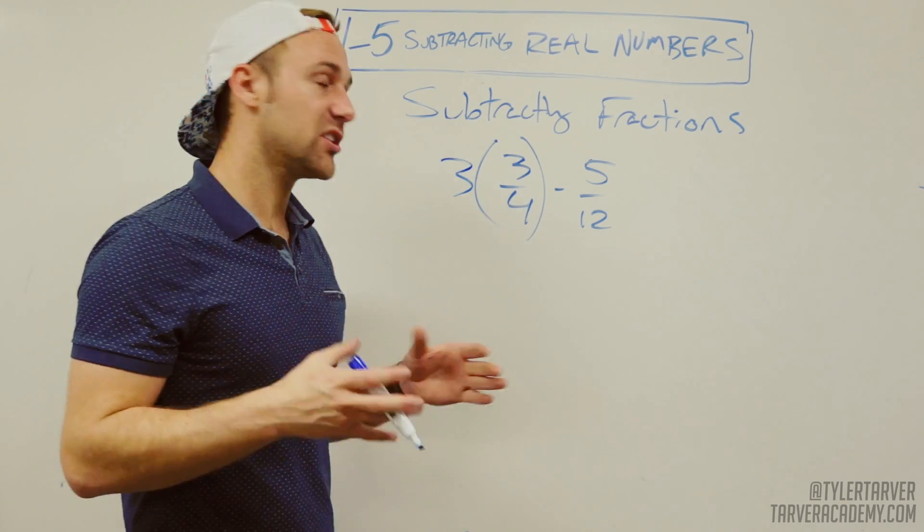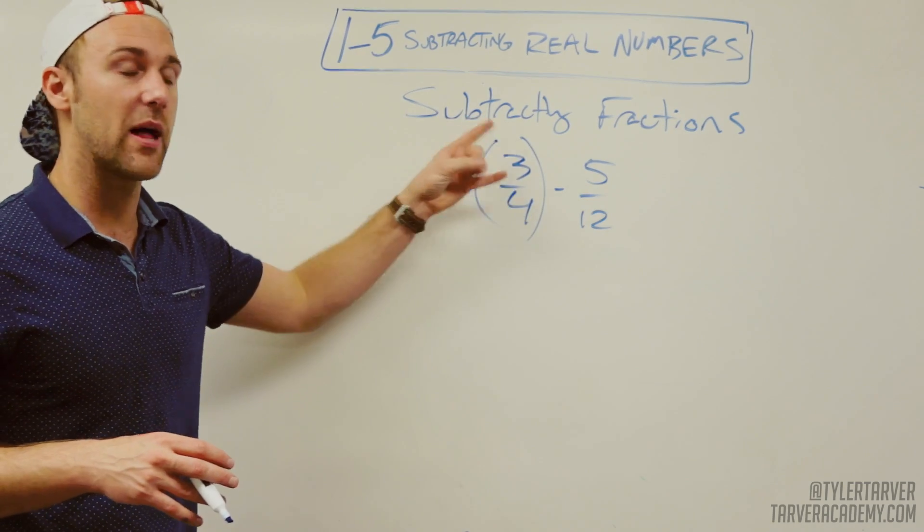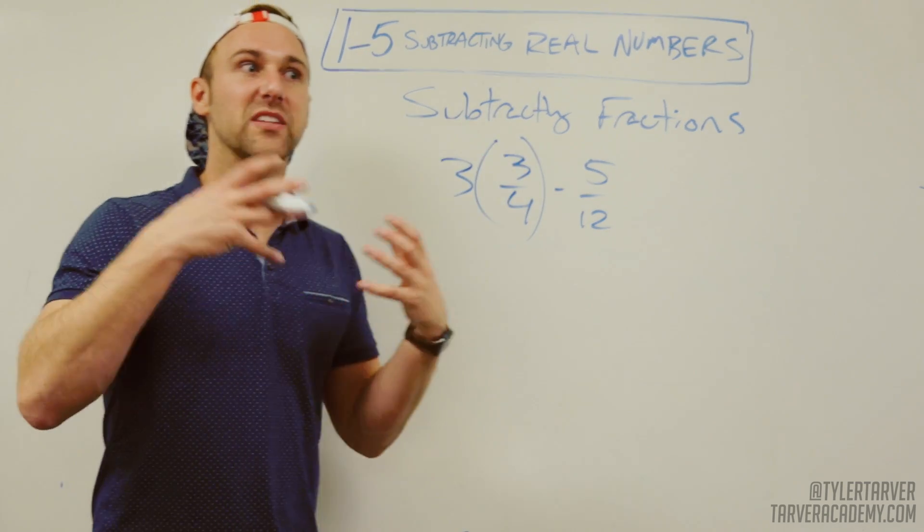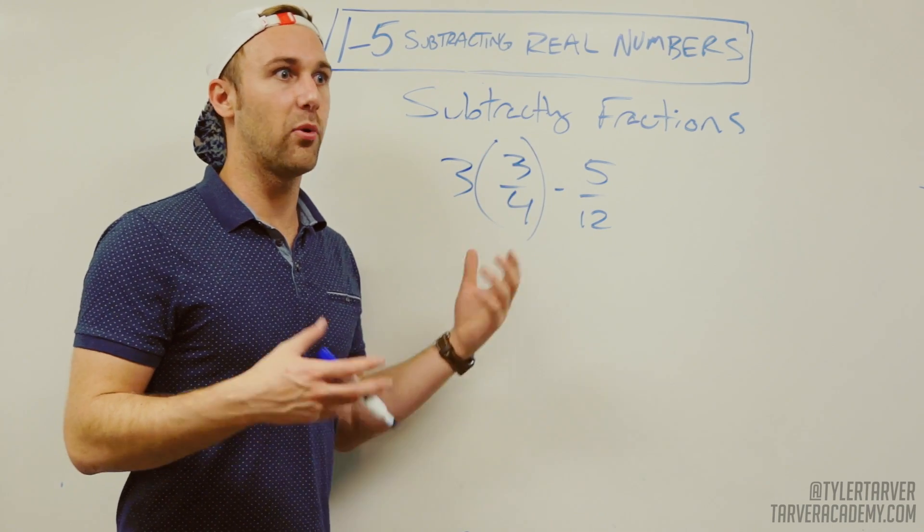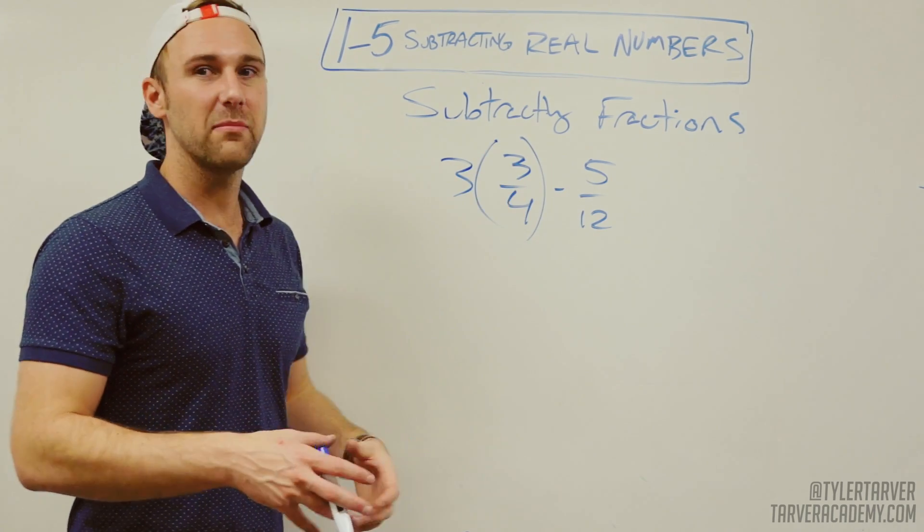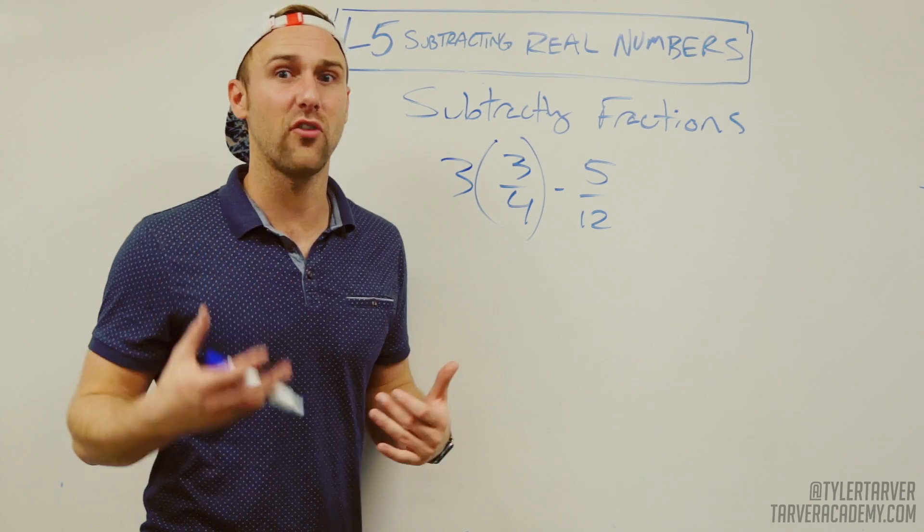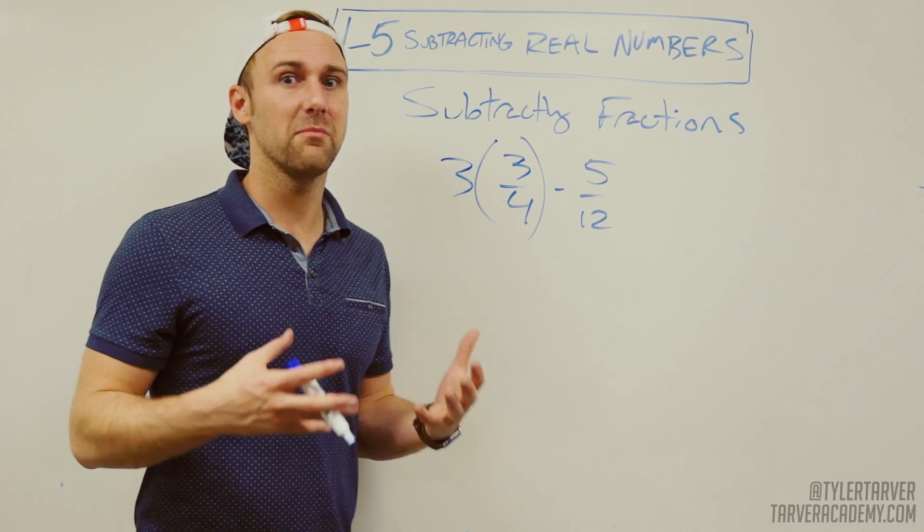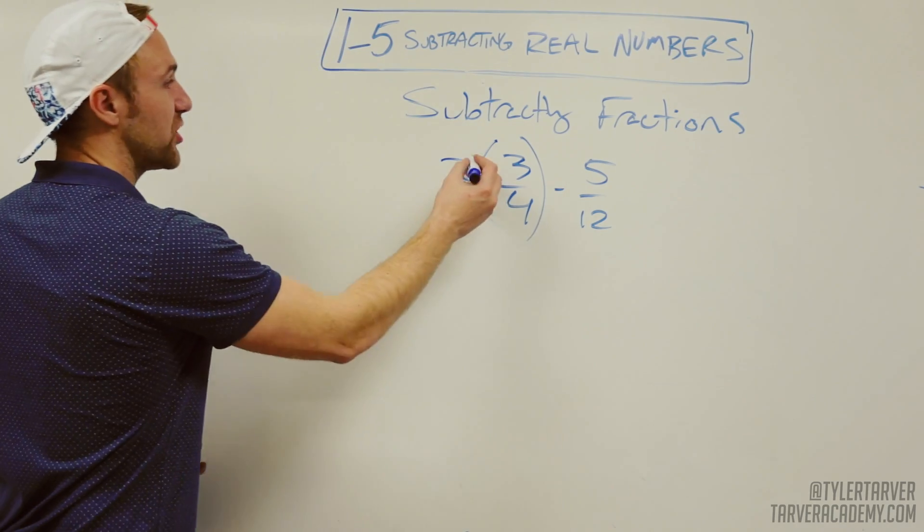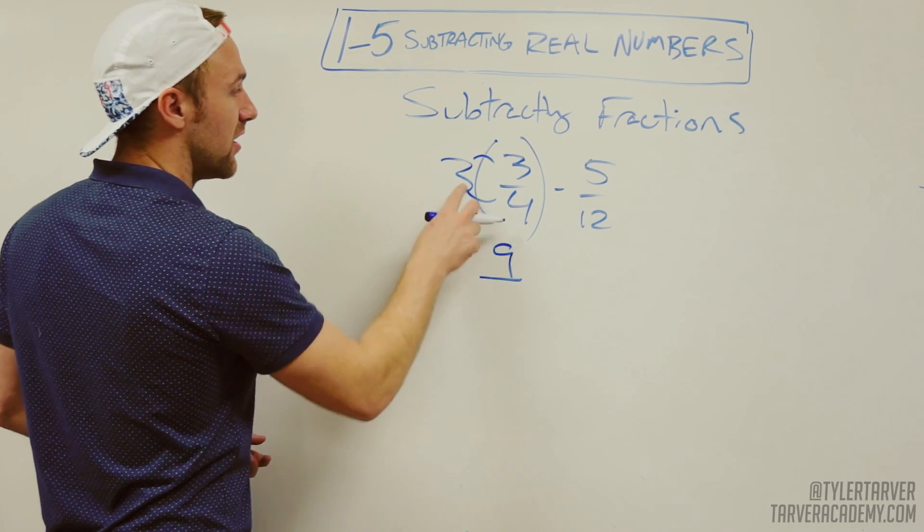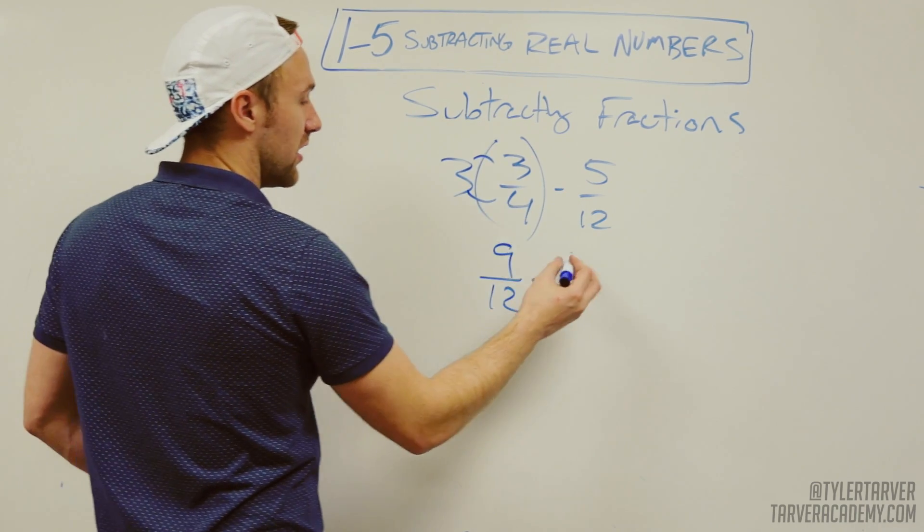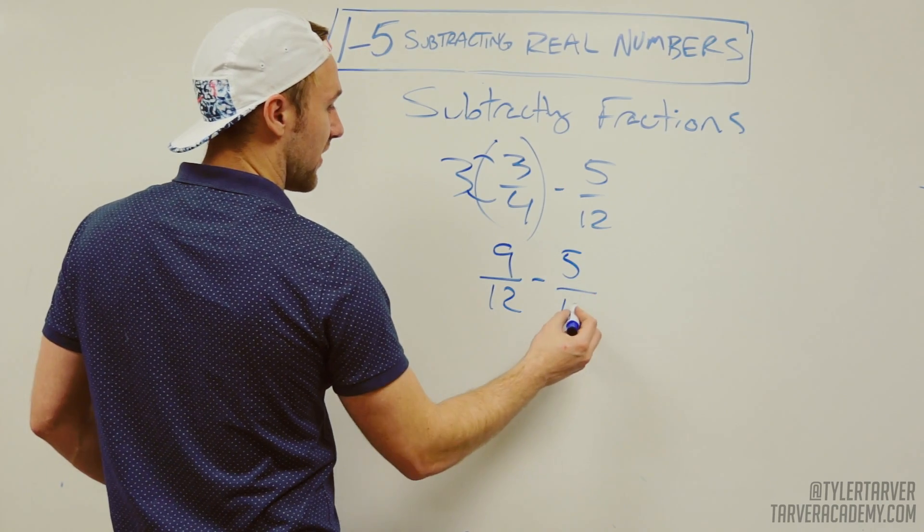I'm not changing the problem. No matter what I multiply this by, as long as I multiply both of them, I'm going to keep the same fraction. Think percentage—that's 75% or 0.75. It doesn't matter how high I go. If I go 75 over 100, still the same number. So I'm not changing it as long as I do it to both. 3 times 3 is 9, 3 times 4 is 12. Then I'm going to subtract 5 over 12.